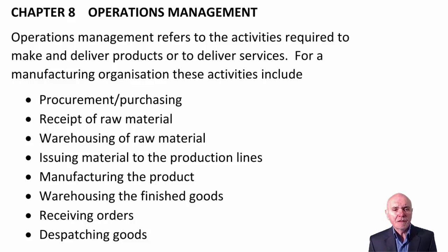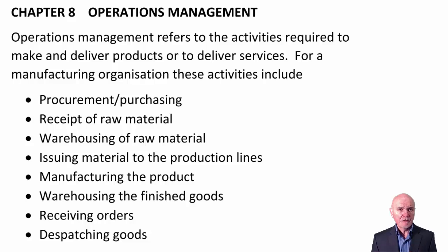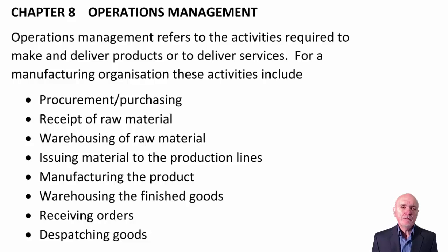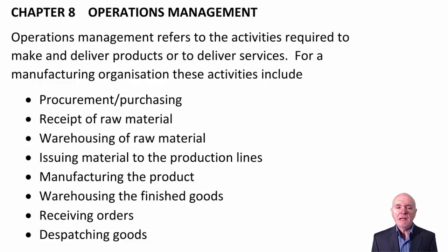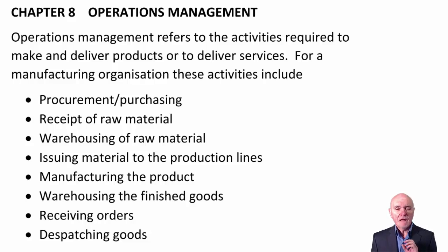For a manufacturing organisation, these activities include procurement or purchasing — that's how we get raw materials — the receipt of raw materials, warehousing and storing them, issuing them in a timely manner to the production line, the manufacturing operations themselves, and what happens to the finished product, whether it's warehoused or goes directly out to the purchaser.